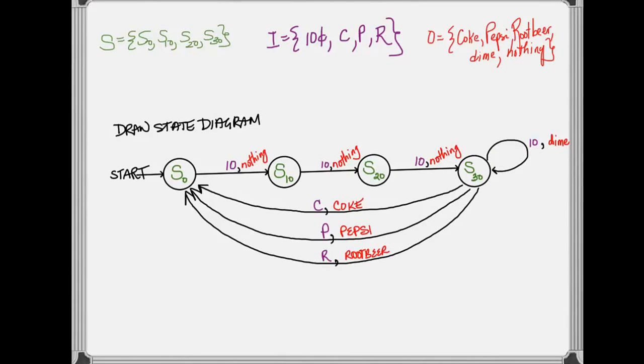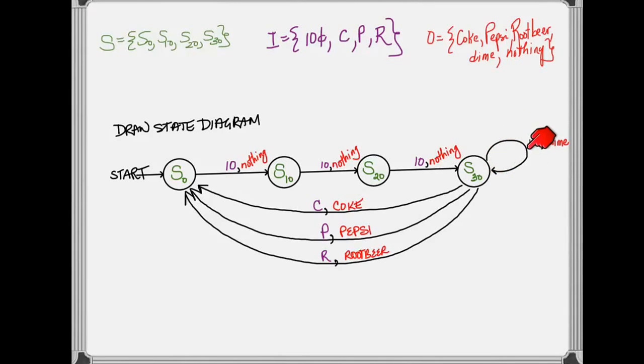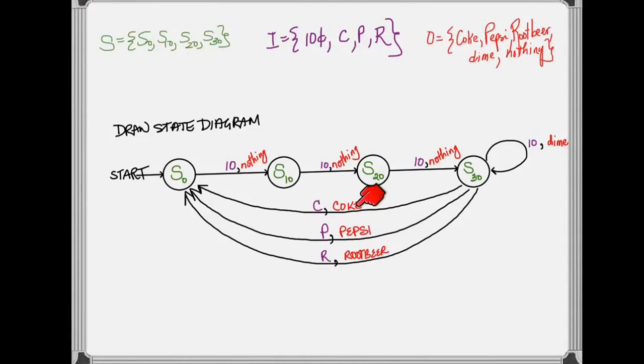But once we get to state S30, adding a dime does nothing but return it back to the user. So this could be a little infinite loop happening here, where you insert the 10 cents and it returns the dime, and you return back to state 30. But at S30, once you hit a button, say the C button, it's going to give you your Coke and return you back to this zero state, where you can begin again.